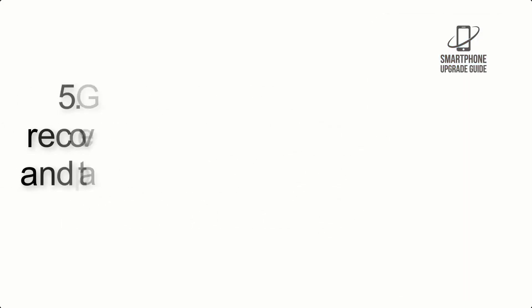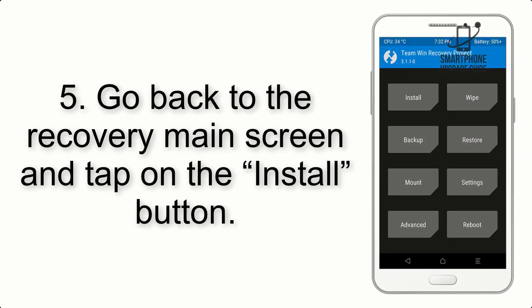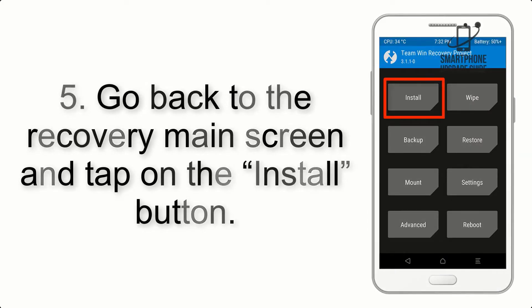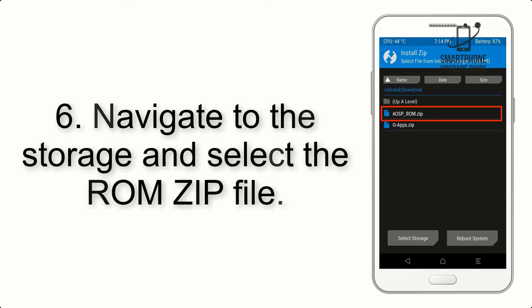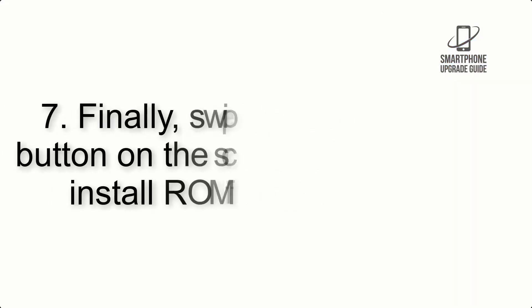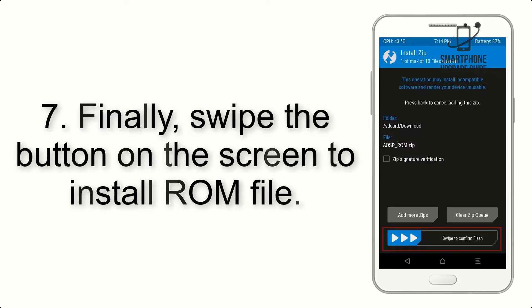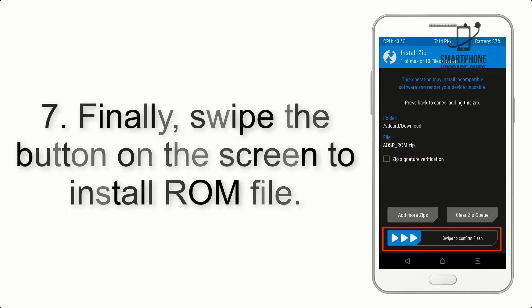Step 5: Go back to the recovery main screen and tap on the Install button. Step 6: Navigate to the storage and select the ROM zip file. Step 7: Finally, swipe the button on the screen to install the ROM file.